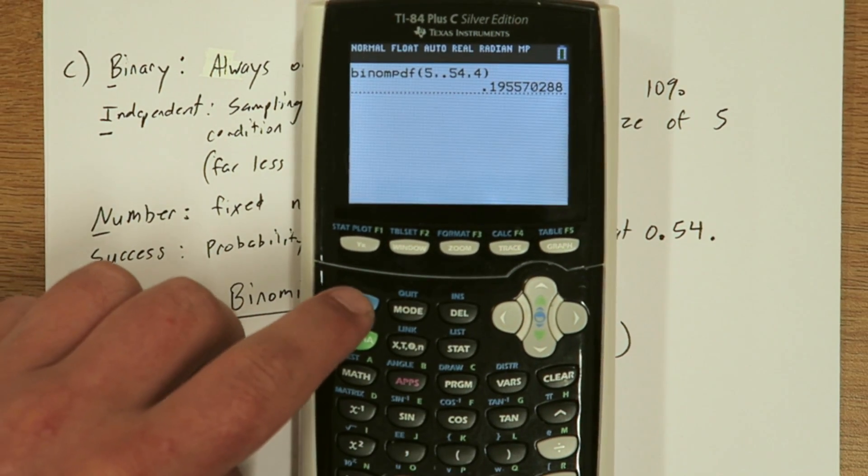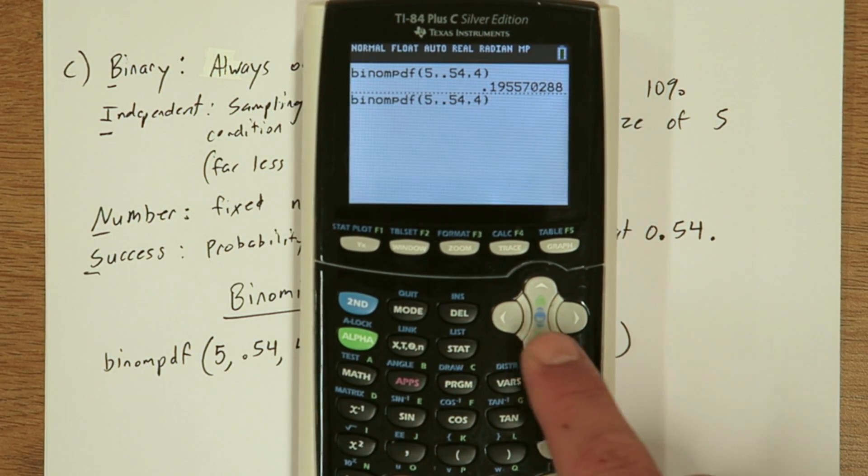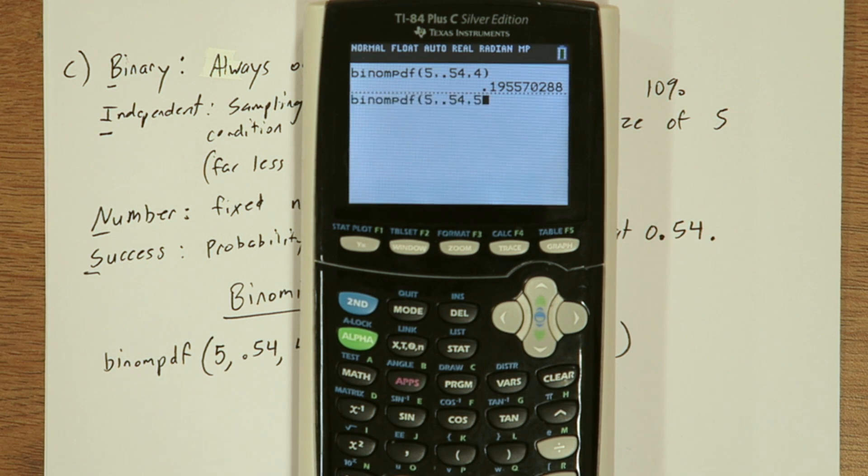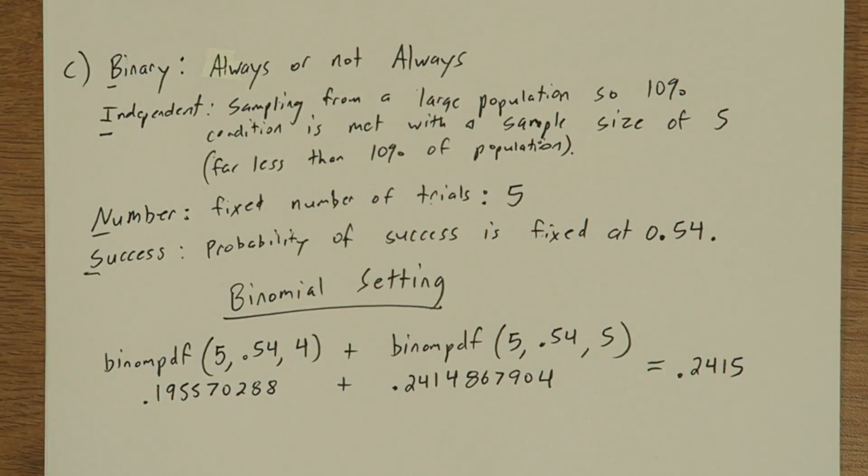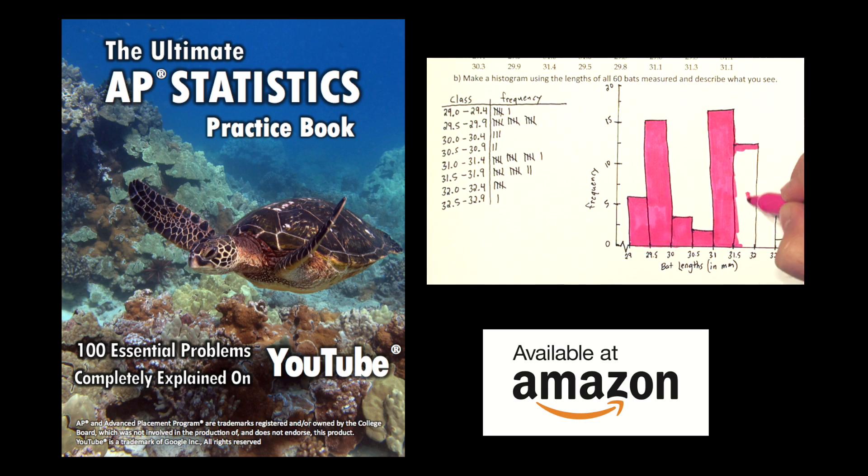A quick little shortcut. If you press second and then the enter key, you can go over to here and just change this last number to a five. This will give us the probability that all five say always. If we just add these two probabilities together, there's our answer. It specifically says to support your answer, so I think checking the conditions was probably necessary.